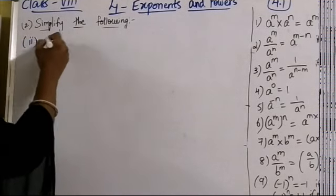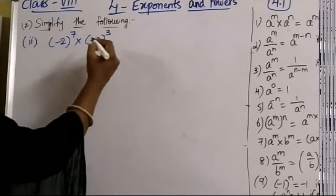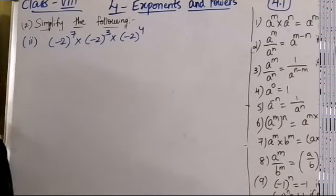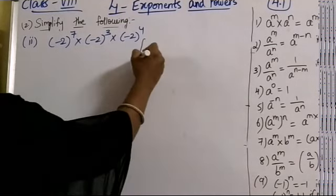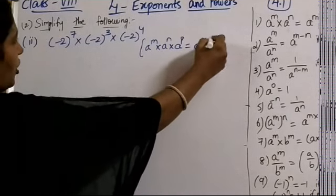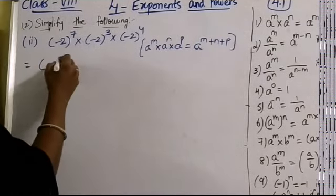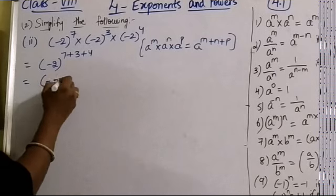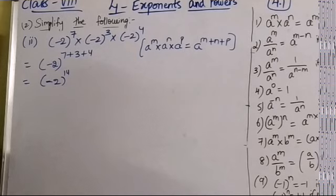Second one: (-2)^7 × (-2)^3 × (-2)^4. This is the same as the previous sum — bases are equal, so we add powers. Using a^m × a^n × a^p = a^(m+n+p): (-2)^(7+3+4) = (-2)^14 is the answer.